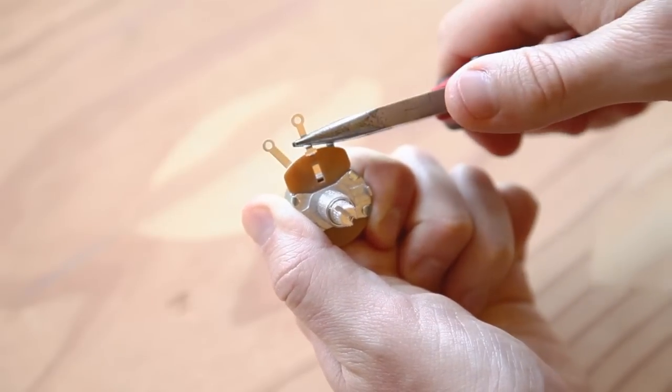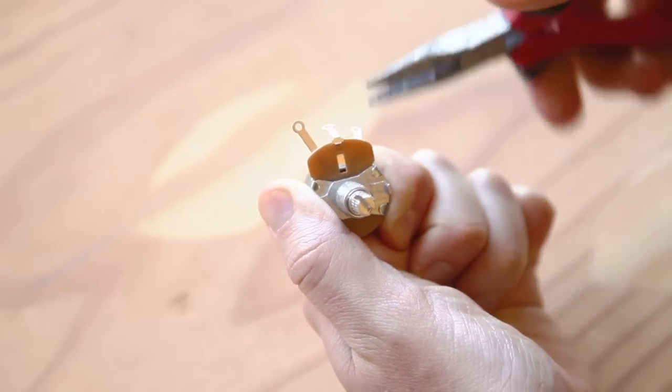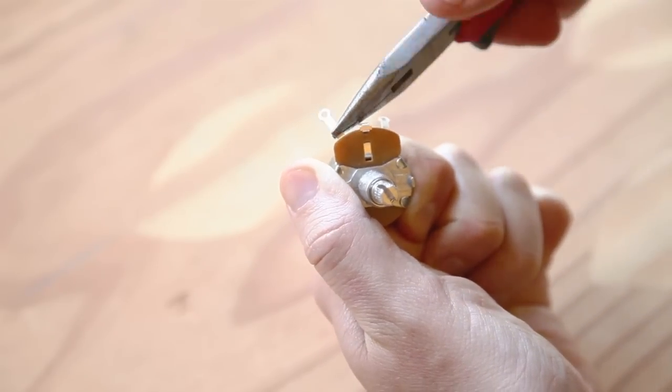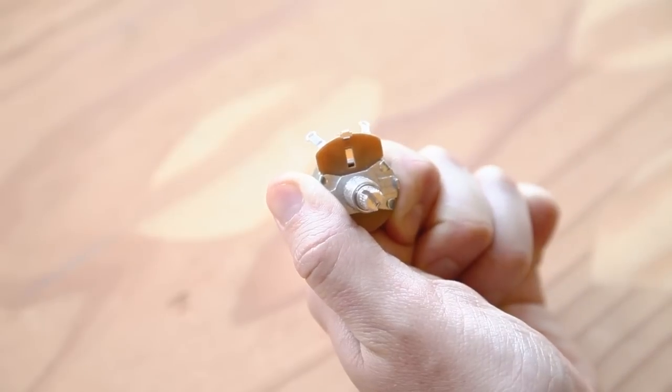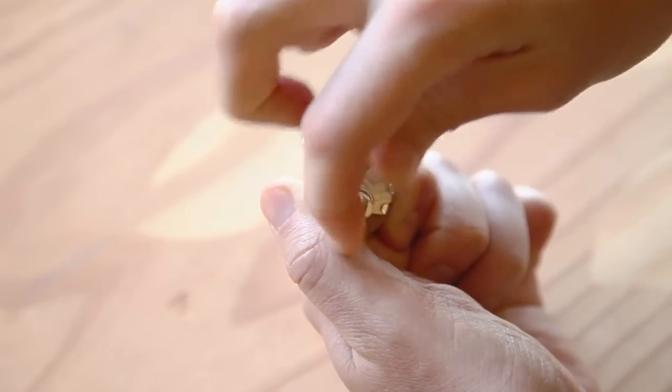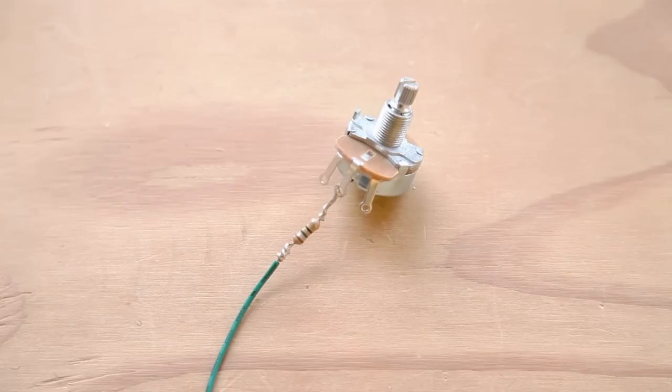The rheostat controls the motor speed. First, bend all three contacts on the rheostat so they're parallel to the shaft. Then turn the rheostat all the way down. We add a 15 ohm resistor in series to bias the range toward the slower motor speeds, which are more useful for tremolo effects.